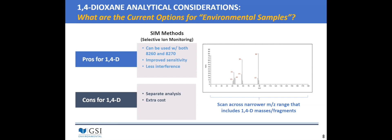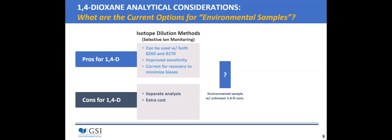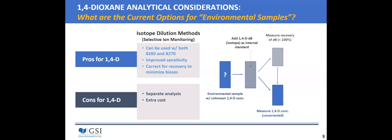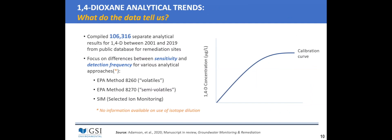Isotope dilution methods — adding an isotopically labeled internal standard to the environmental sample and using it to correct for poor recovery of the target analyte — offer improved accuracy and sensitivity. This can be applied to both the 8260 and 8270 methods, though it comes at extra cost. Our study analyzed over 100,000 data points collected over 19 years from 2001 to 2019, looking at what the data tell us about sensitivity and detection frequency over time for the 8260, 8270, and SIM methods.